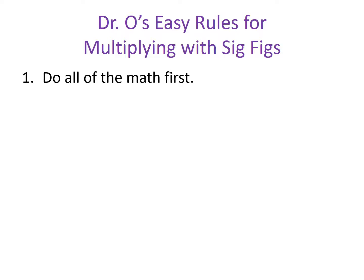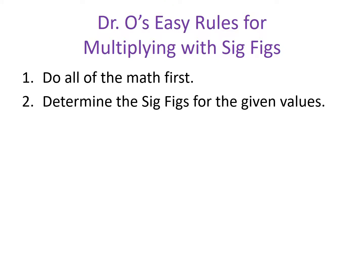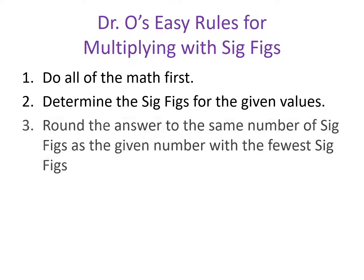So rule number one is to do all the math with no other number manipulations. Rule number two states that next you need to determine the significant figures for the values you were given. The numbers or values that you were given to perform your calculation — you go back to those values and determine how many significant figures each one has.